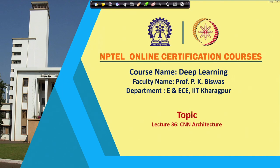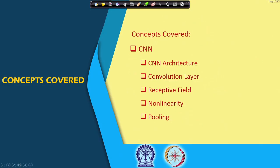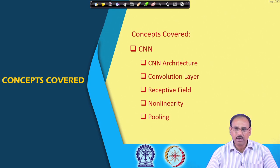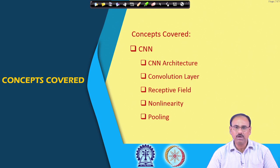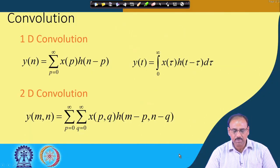Given this, in today's lecture we will talk about the architecture of convolutional neural networks. While doing this we will talk about what is a convolution layer, we will also give an idea of what is known as receptive field, then the non-linearity used in convolutional neural networks, and also the pooling operation. Let us see each of these one by one.